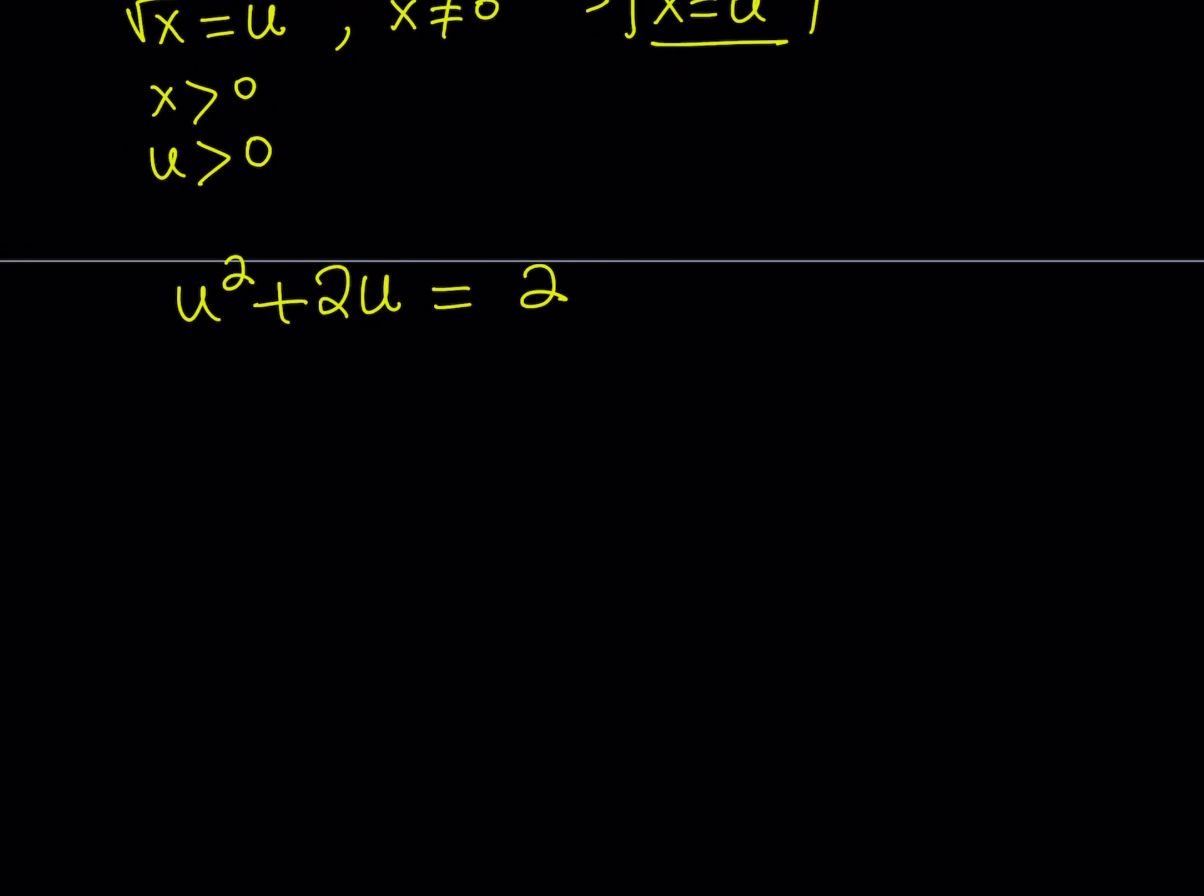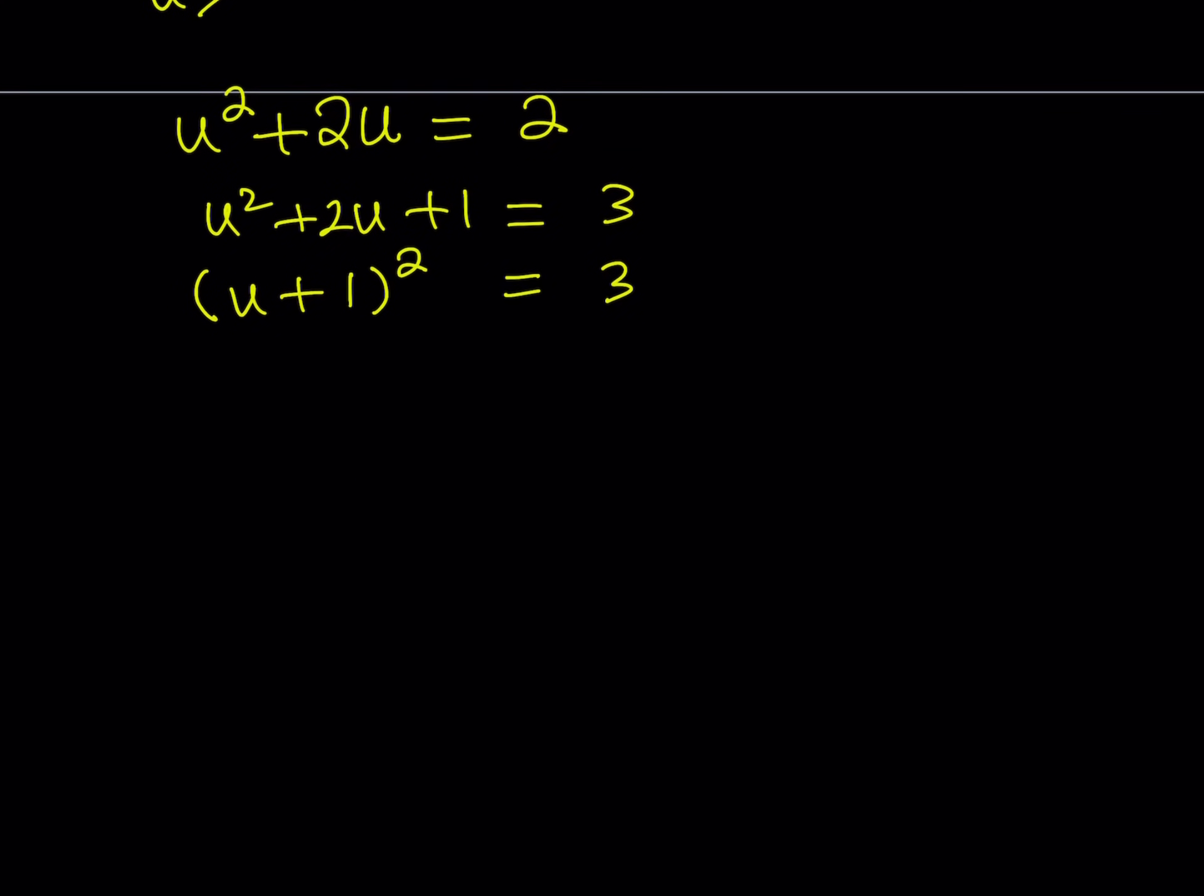So, we have u squared plus 2u equals 2. We can add 1 to both sides to complete the square. You could also use the quadratic formula. There's more than one way to do it. The left-hand side becomes u plus 1 quantity squared equals 3.